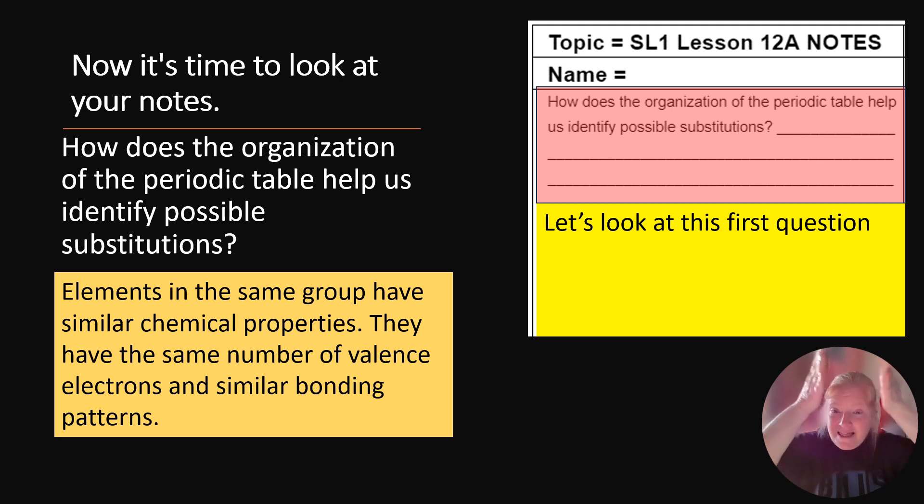Elements in the same group, the same vertical column, have similar chemical properties. Why? Because they have the same number of valence electrons and similar bonding patterns. So those valence electrons are the ones that are going to bond. So if they have the same number of valence electrons, their bonding is going to be similar.